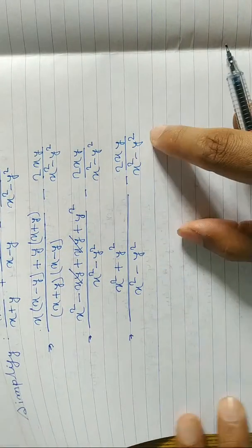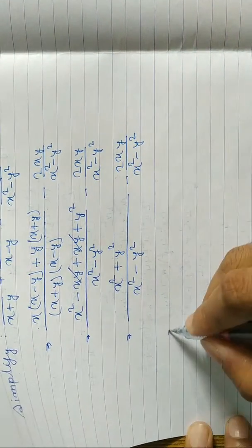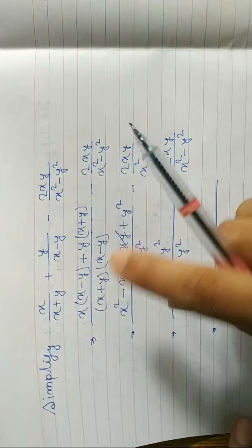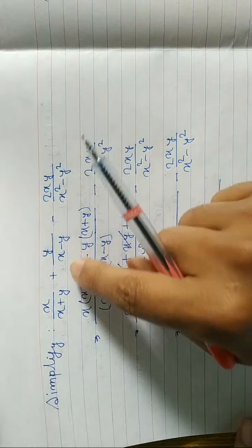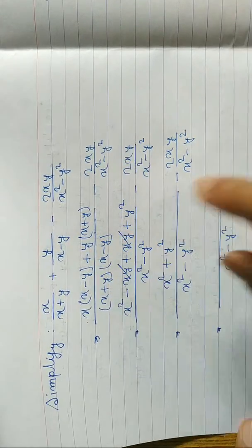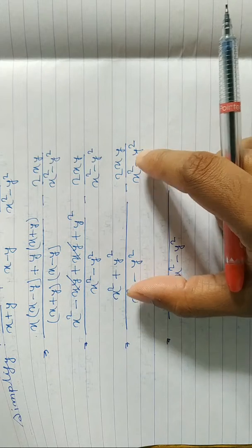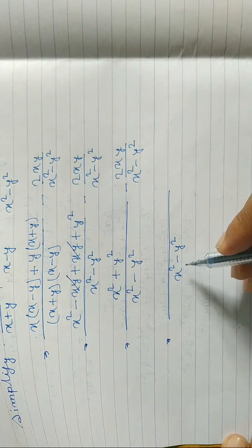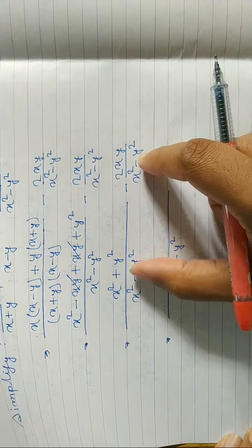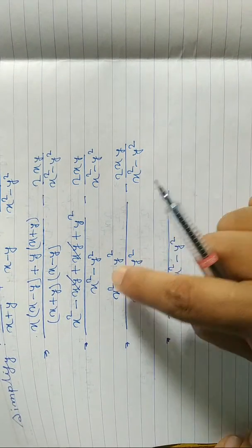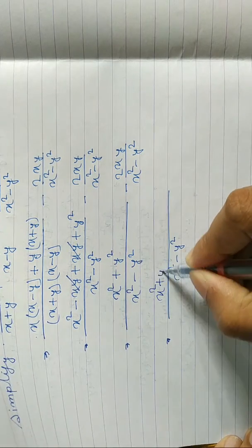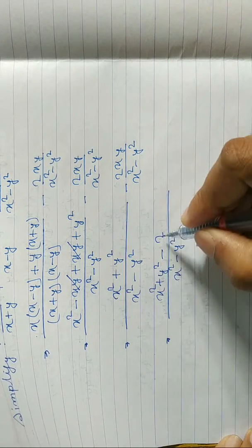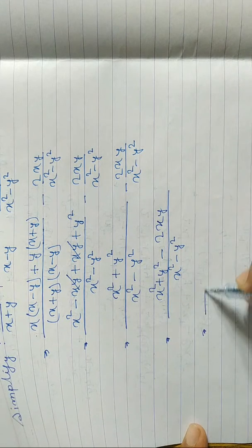What remains is x square plus y square by x square minus y square, minus 2xy by x square minus y square. Now we take the LCM of these two terms. Both denominators are the same — x square minus y square — so no need to take both; we write the common denominator only once. Since denominators are the same, no cross-multiplication is needed; we simply write the numerators together.